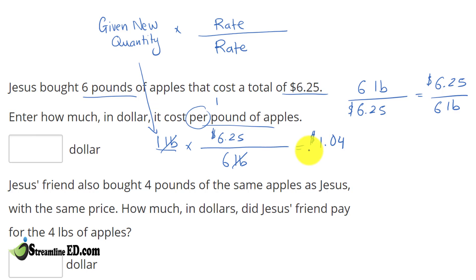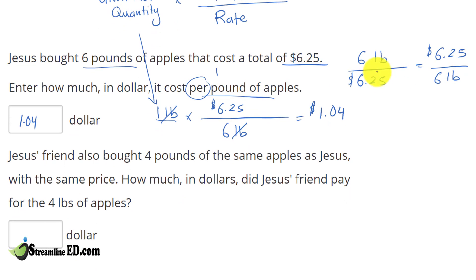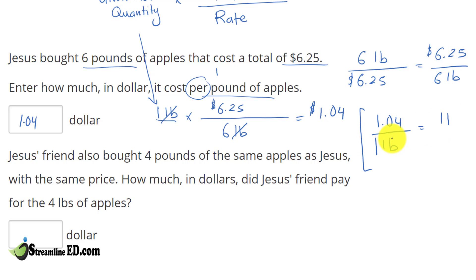And that's how it works — isn't that easy? Now, this is where it gets really interesting, because now we have two rates. One is 6 pounds per $6.25, and the other is $1.04 per 1 pound, or 1 pound equals $1.04. So we have the same relationship expressed in two different ways — actually four different ways.